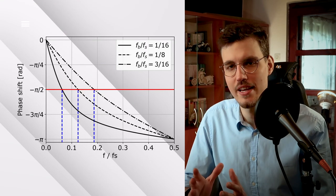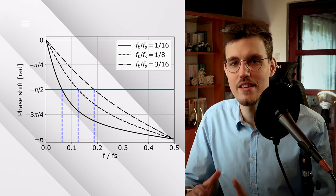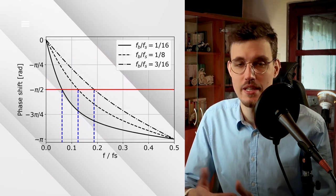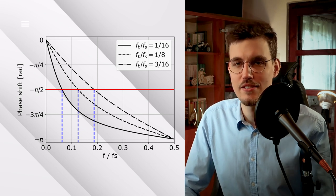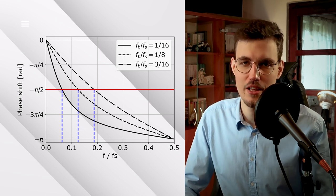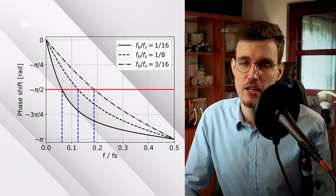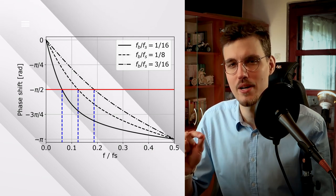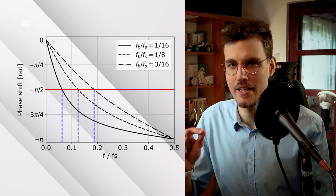So, what is the frequency-dependent delay that the all-pass filter introduces? Well, the higher frequency, the later it will appear at the filter's output. The amount of phase delay can be seen in the phase response of the all-pass filter. In this figure, you can see such responses for various values of the break frequency, so the frequency at which the phase shift of the all-pass is exactly minus pi over 2.